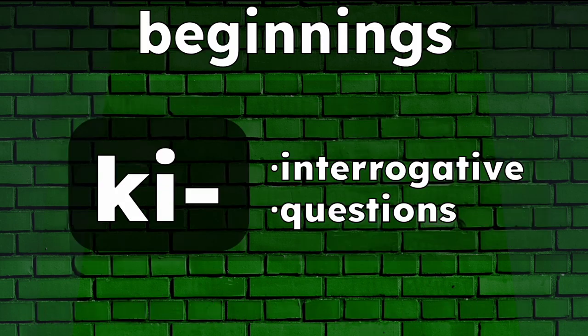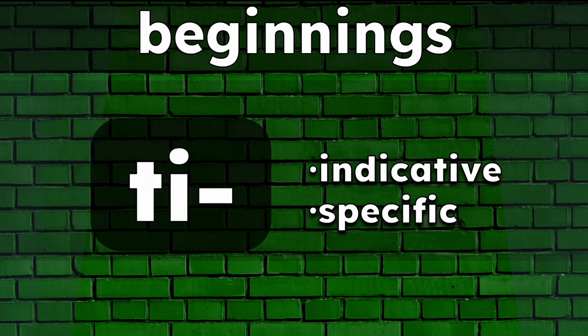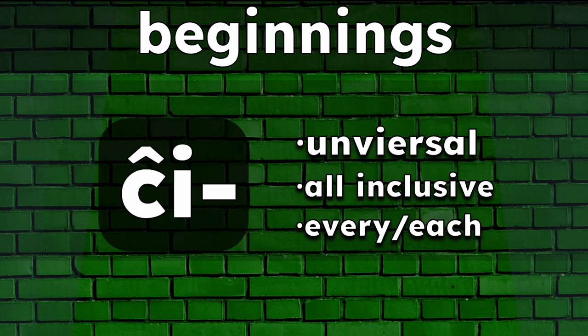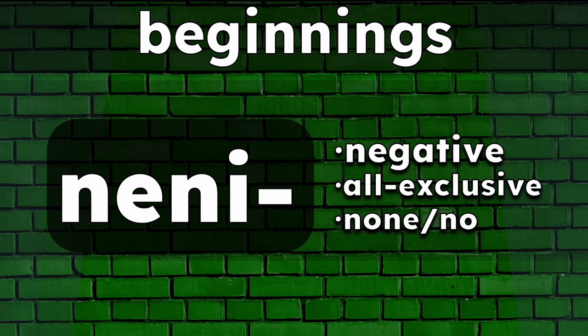Let's start with the beginnings. Ki- represents an interrogative or question word. Ti- is for indicative words — it's used to point out specific things or qualities. I- is for anything indefinite, unknown, or unspecified. Ĉi- represents universal or all-inclusive correlative words; it's used for words related to every or each. Neni- is used for negation — it's for all-exclusive correlatives, or words related to none or no.